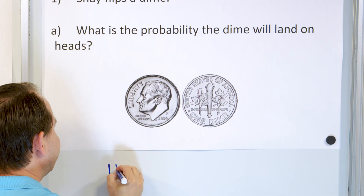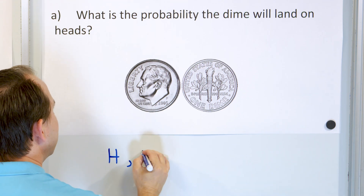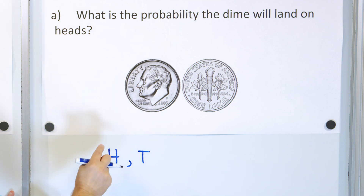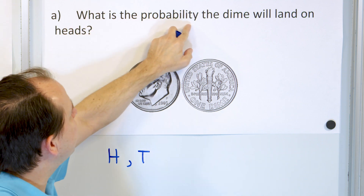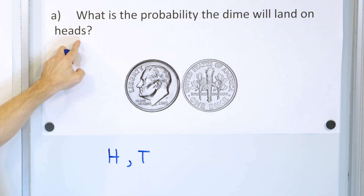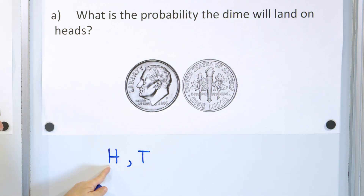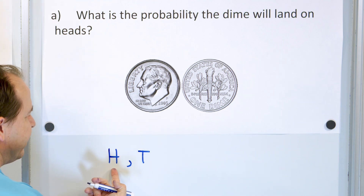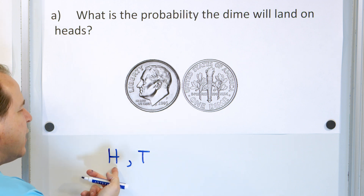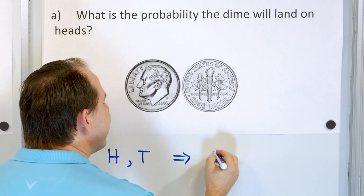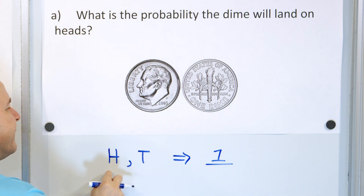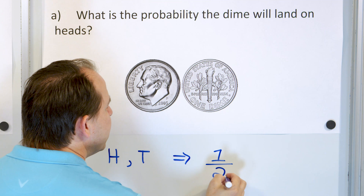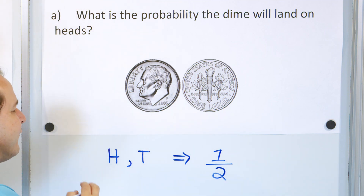So the outcome could be heads or tails. The outcome I'm interested in is the probability the dime will land on heads. Of these two possible outcomes, how many ways can I get heads? There's only one heads and one tails, so one outcome is a head out of two possible outcomes. You write it as one over two.